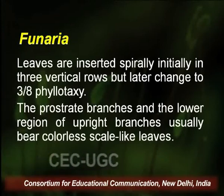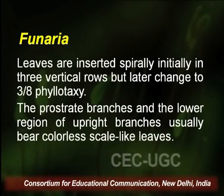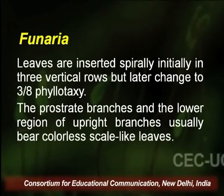As the gametophyte matures, the three vertical rows change into a spiral arrangement, sometimes termed 3/8 phyllotaxy. This means 8 leaves are arranged spirally in three complete circles, resembling a spiral staircase.